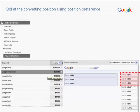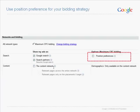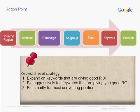The keyword positions report is another helpful resource for optimization. Find out which ad position results in the most conversions — with that information you can use position preferences in AdWords to show ads only in a certain range of positions. To summarize the keyword-level strategies: expand on keywords giving good ROI, bid aggressively for high-ROI keywords, and bid smartly for the most converting positions.